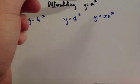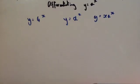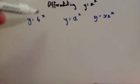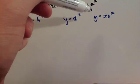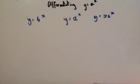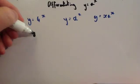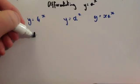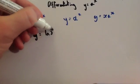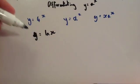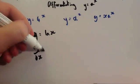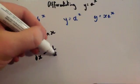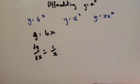In this video we're going to look at differentiating a to the power of x. We're going to look at differentiating expressions such as y equals 4 to the x, y equals a to the x, and y equals x·a to the x. Before we do that, we need to know that the differential of y equals ln x — from C3 — is dy/dx equals 1 over x. That's going to be quite useful for the proof.